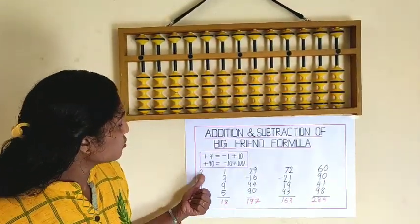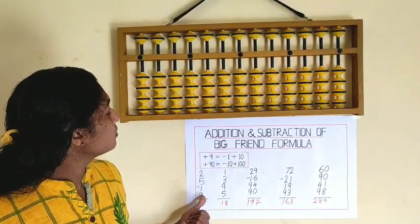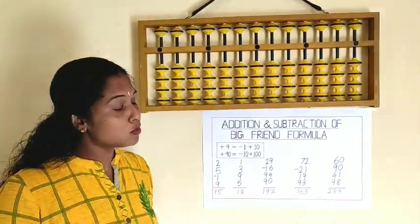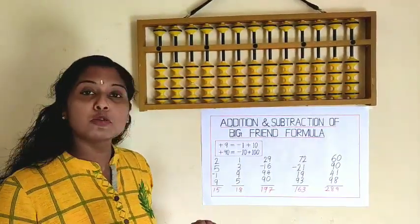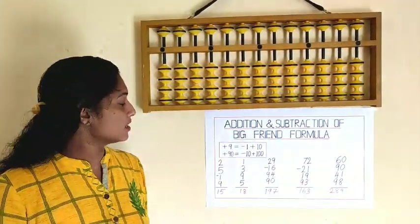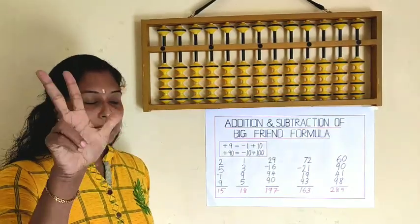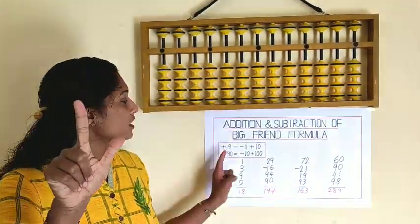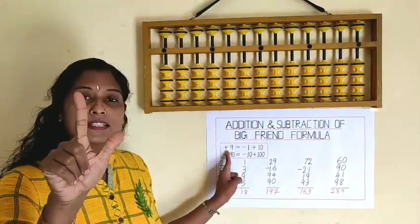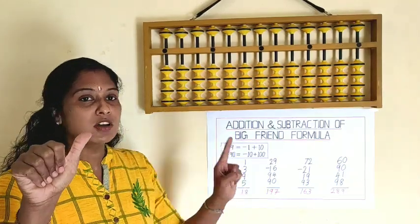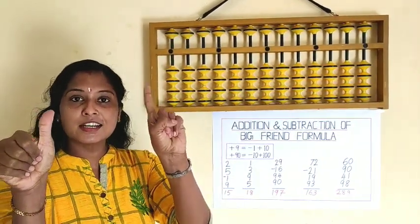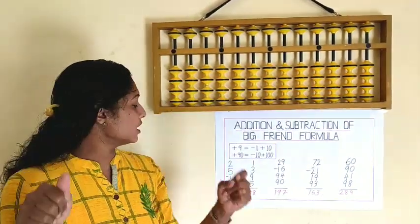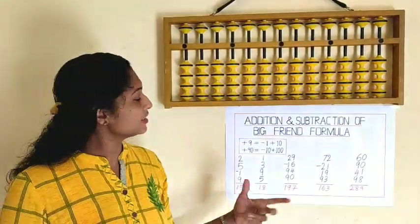Now we are going to do these sums by using finger method. Listen how to do it by using finger method. 2 plus 5 minus 1 plus 9 — what is the formula? Plus 9 is minus 1 plus 10. What is the answer? 10, 5, 15. Our answer is 15.